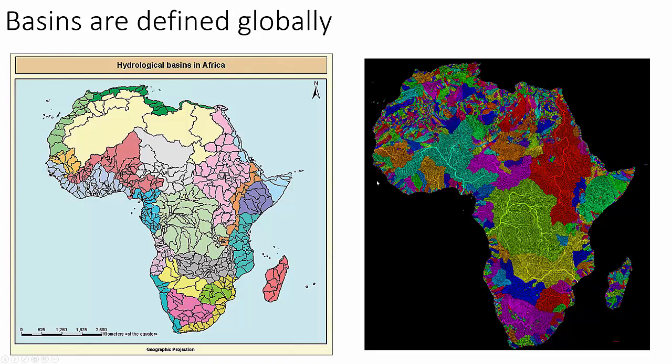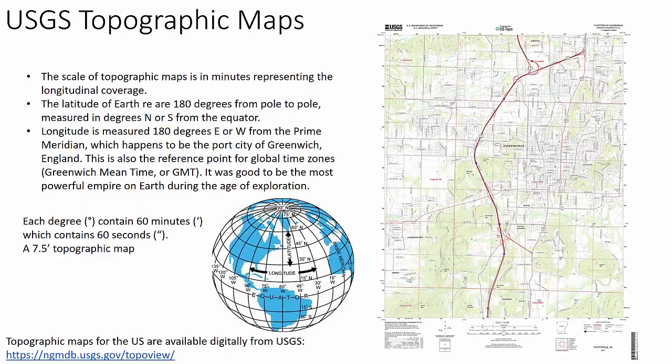These maps are generated using geospatial information system tools — GIS — which we will be using in this class. If you've never used them, you're going to get to learn, and it's going to take some time. We don't have a lot of time; you only have five weeks. So we'll start with the old-fashioned way: topographic maps — maps of topographic lines in the US available free from the USGS.